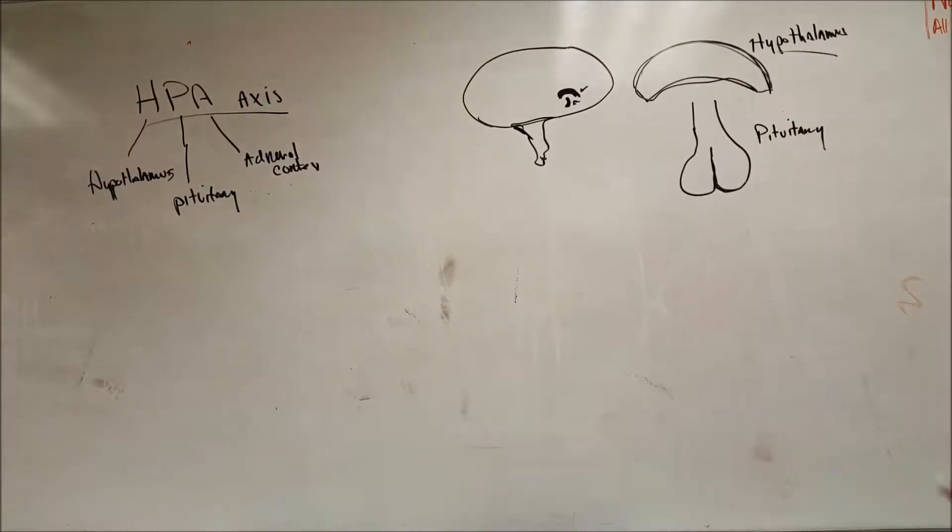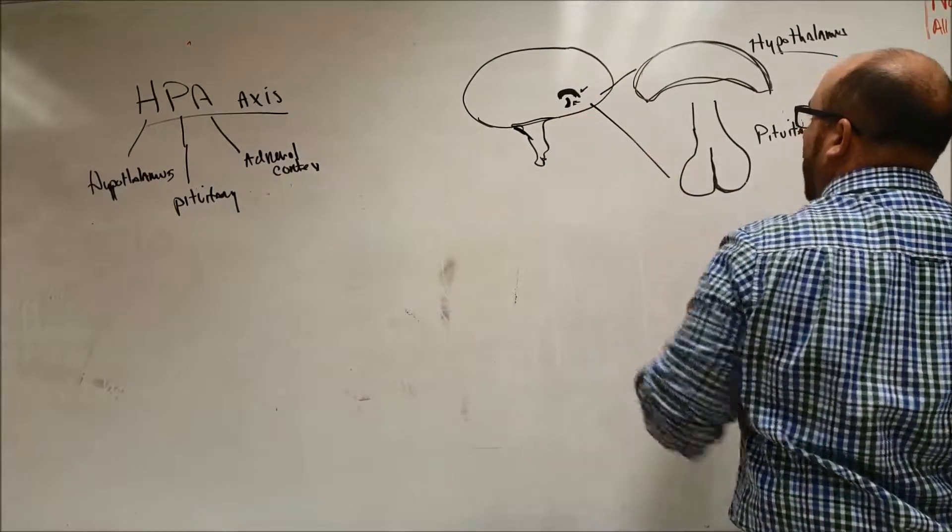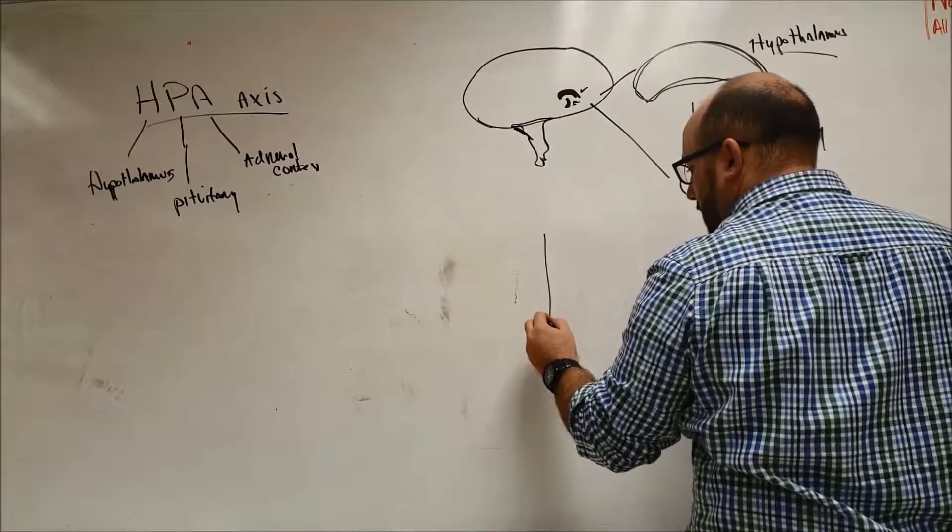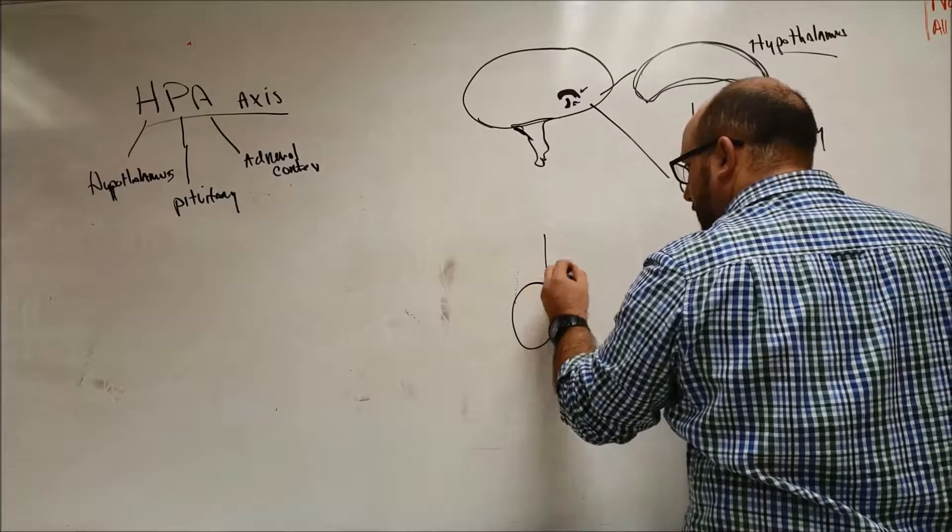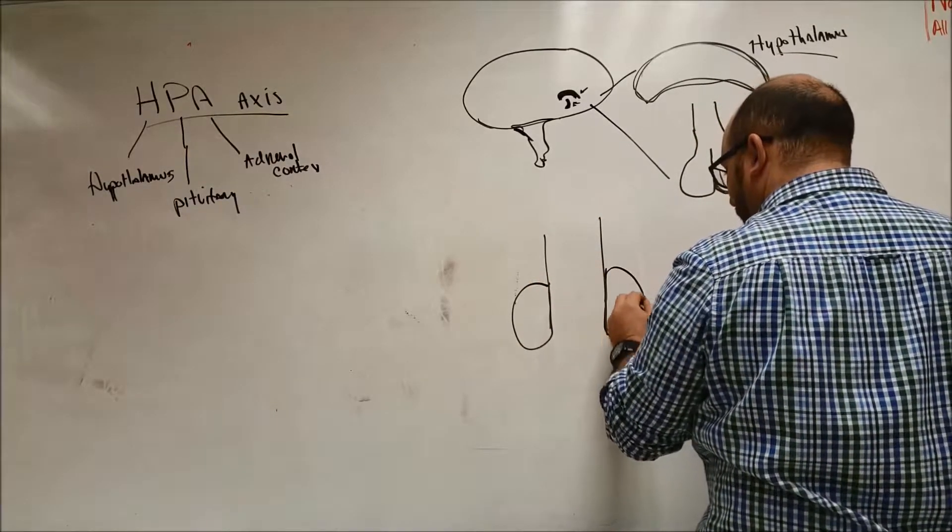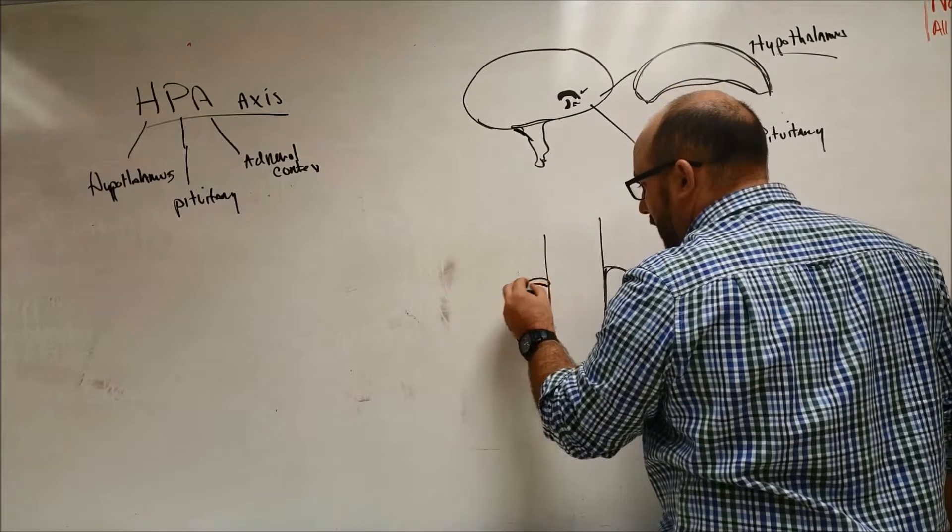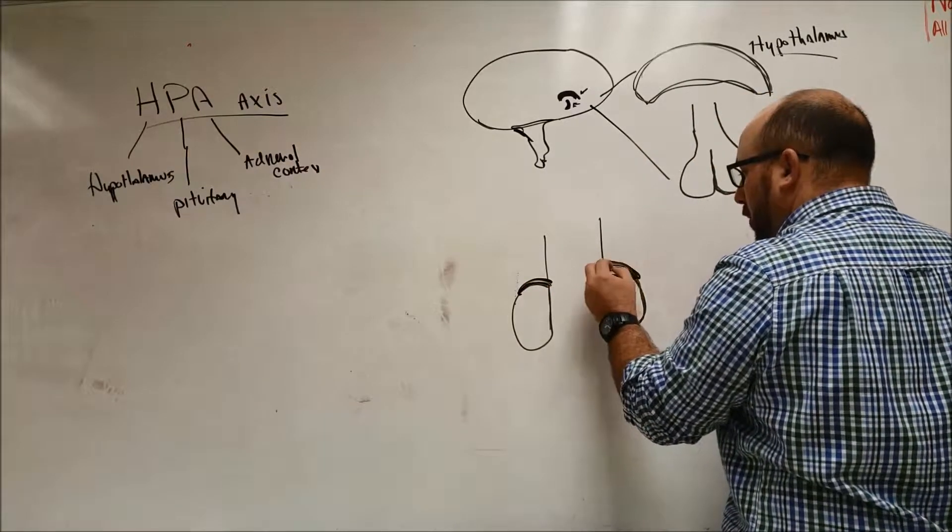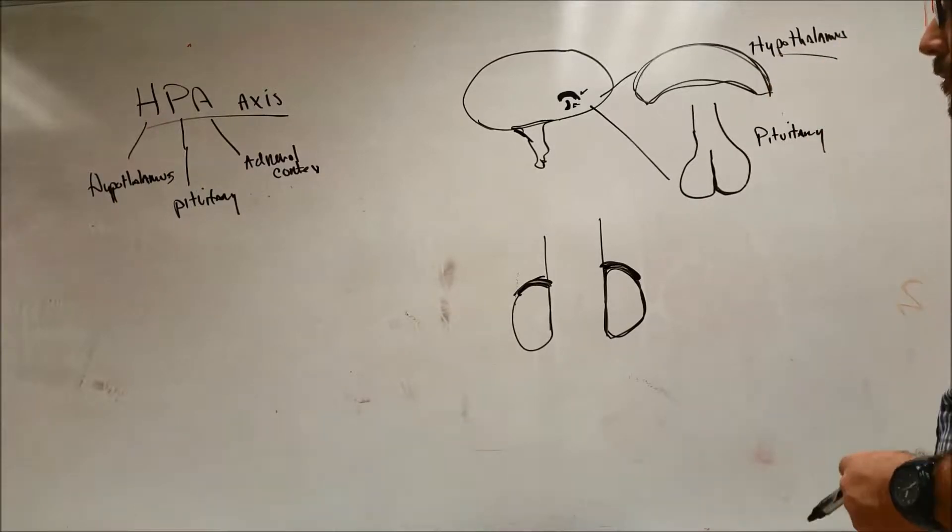So let's blow it up over here. This is your pituitary gland. It has two lobes to it. And then above this is that structure, I'm just going to draw it square, it's a structure of cells that is the hypothalamus.